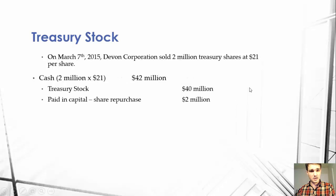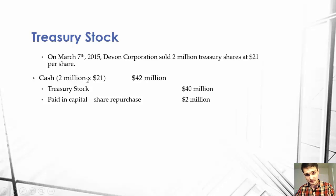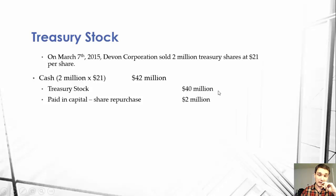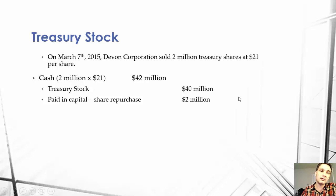On March 7, 2015, Devin Corporation sold 2 million treasury shares at $21 per share. We first debit cash — 2 million times $21 is $42 million. When we receive cash over what we originally paid for the treasury stock, we only credit treasury stock to the amount we originally paid, which is $40 million. The remainder — $2 million — we put in paid-in capital share repurchase, which increases our equity because we received more for the shares than we originally repurchased them for. Remember this paid-in capital balance because we'll need it in the next journal entry.